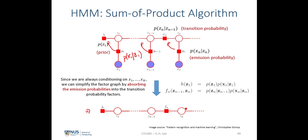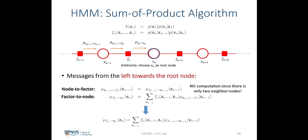In this factor graph, h, our prior factor, is given by the product of the prior distribution over z1 multiplied by the conditional probability of x1 given z1. And f is given by the product of the transition probability and the emission probabilities.